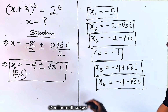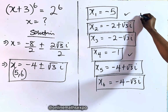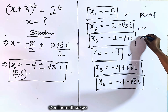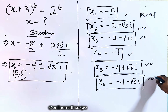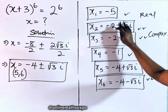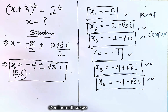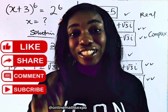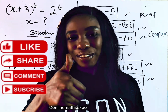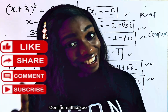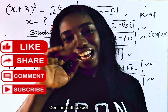These are the six values of x as we said we should have at the beginning. x = −5 and x = −1 are the real solutions because they can be found on the number line. The remaining four are the complex solutions because they contain both real and imaginary parts. I hope you learned something — don't forget to share and subscribe. See you in the next class. Bye!